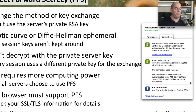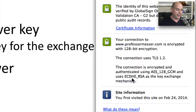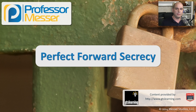One website that is using this PFS method of transferring the keys is the Professor Messer website. If we look at the encryption details for that server, you can see that the connection is encrypted and authenticated using AES-128-GCM and uses elliptic curve Diffie-Hellman ephemeral RSA as the key exchange mechanism. This means that it's using Perfect Forward Secrecy to have a different method of exchanging that symmetric key with every single session to the Professor Messer website.